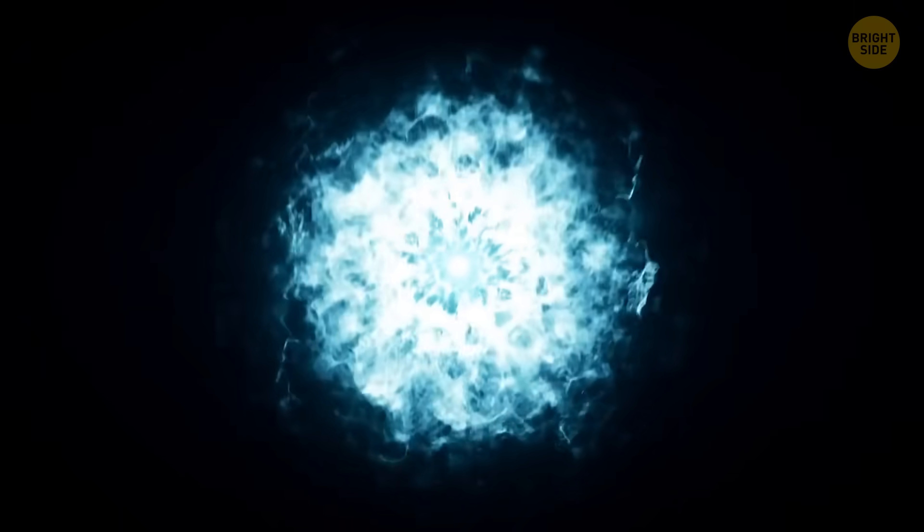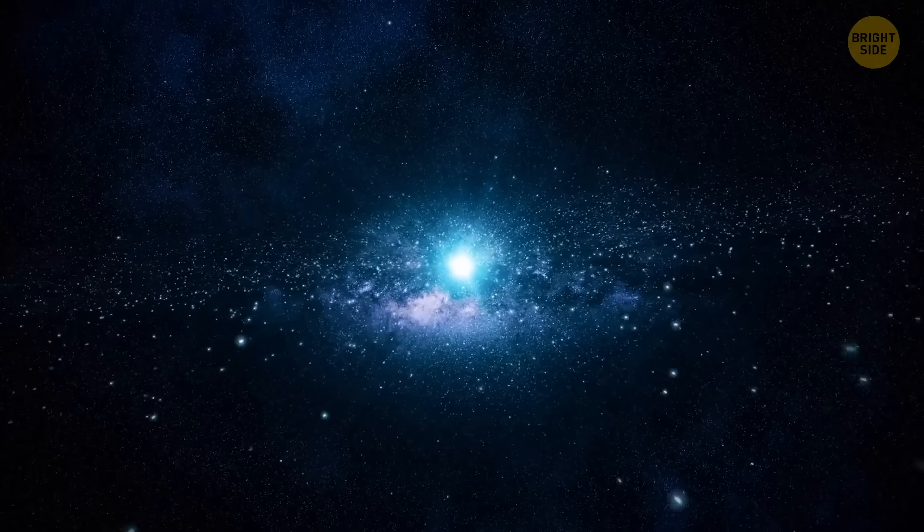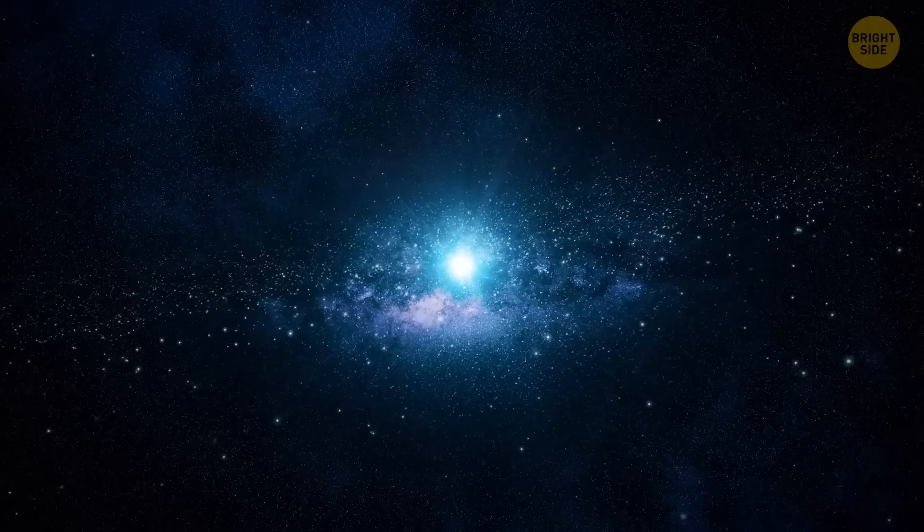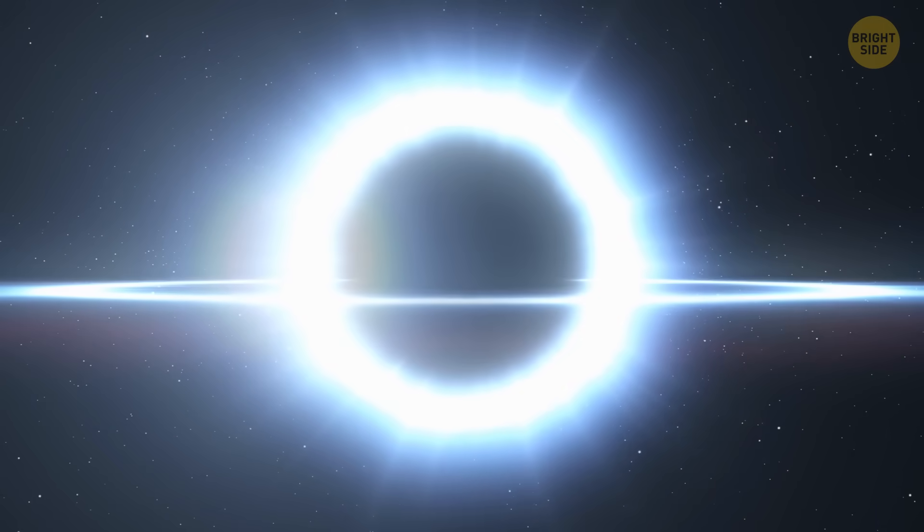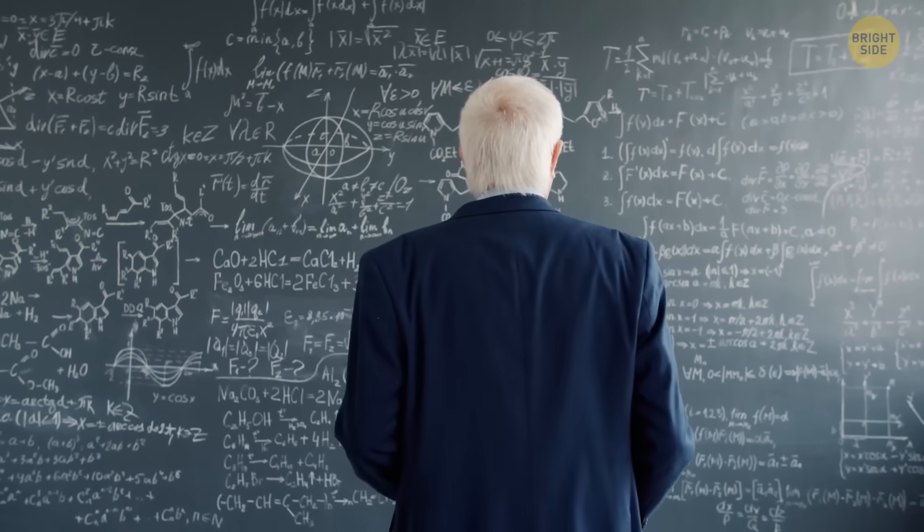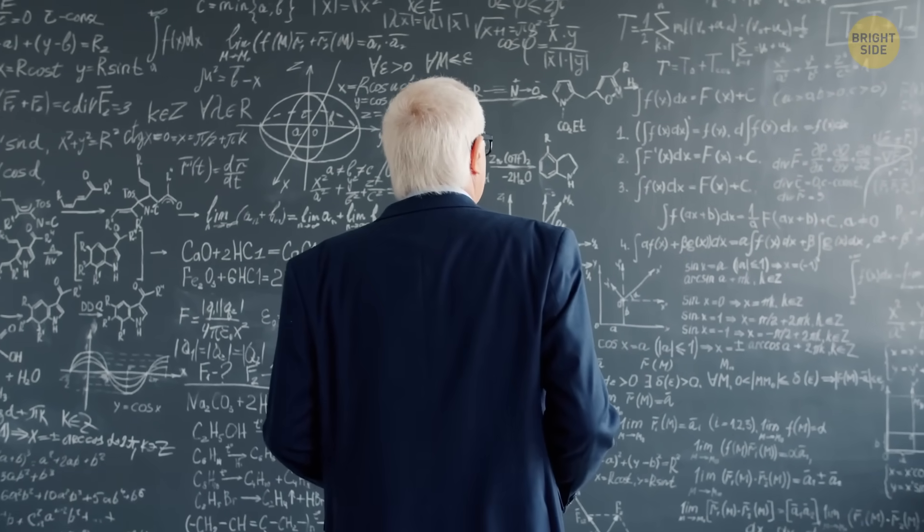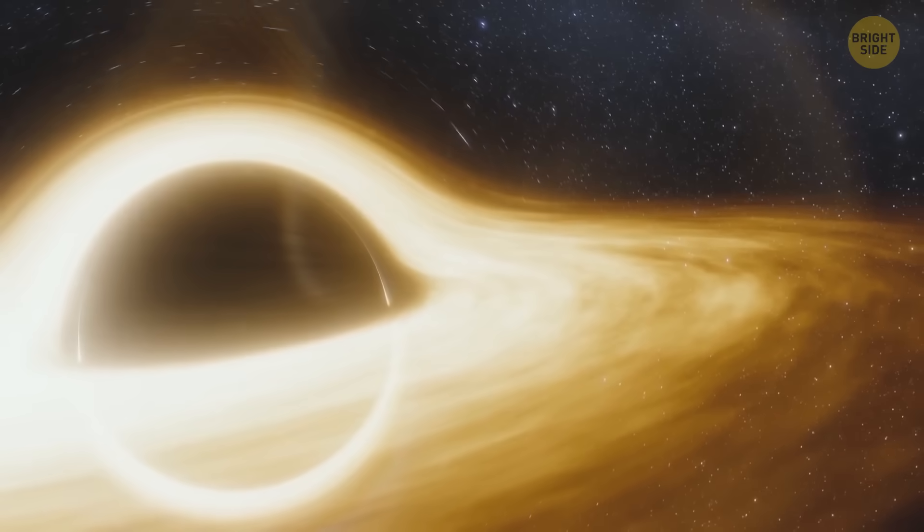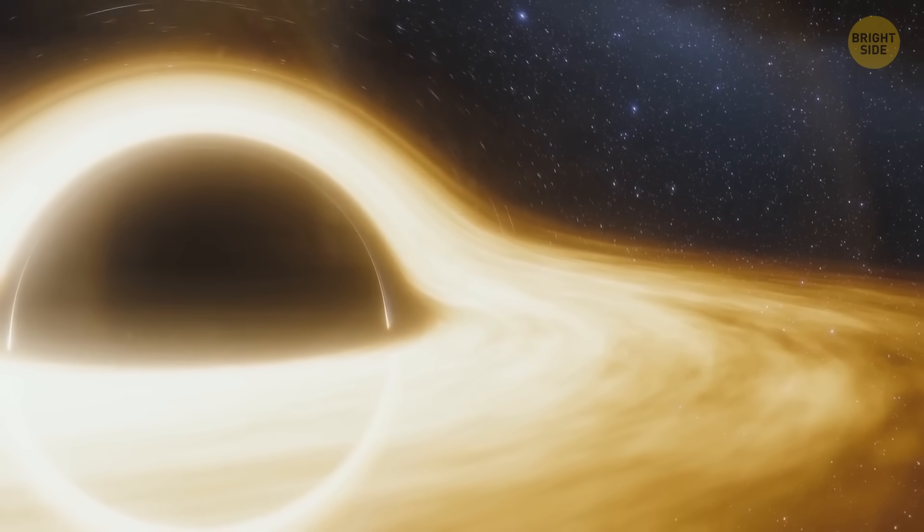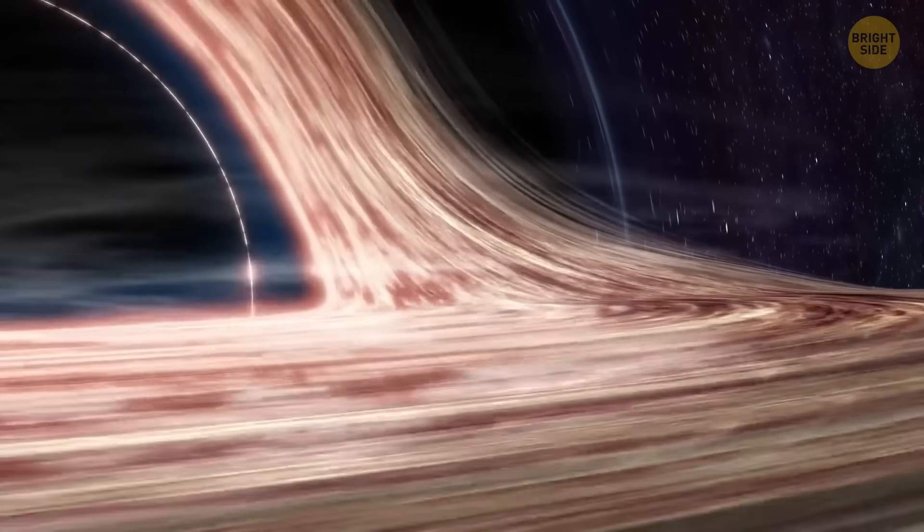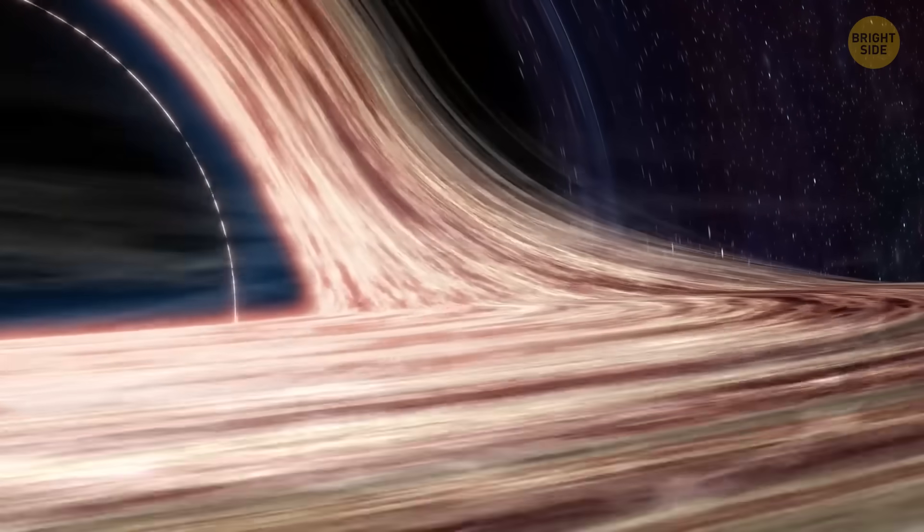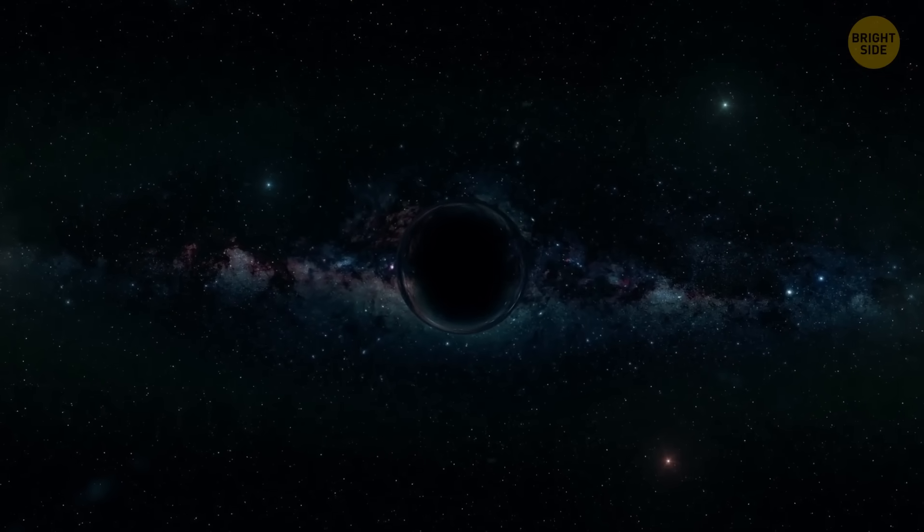At first, scientists thought those space explosions were failed supernovae. That's when a star tries to explode, but instead collapses in on itself, kind of like a balloon popping inward. That collapse can create a black hole in the middle that will eat the star from the inside out. But recently, a new theory has popped up, and it's even cooler and creepier. It has to do with black holes, super-squished leftovers from exploded stars. They're so powerful that even light can't escape their clutches if it gets too close. That's why they're totally dark and impossible to see directly.